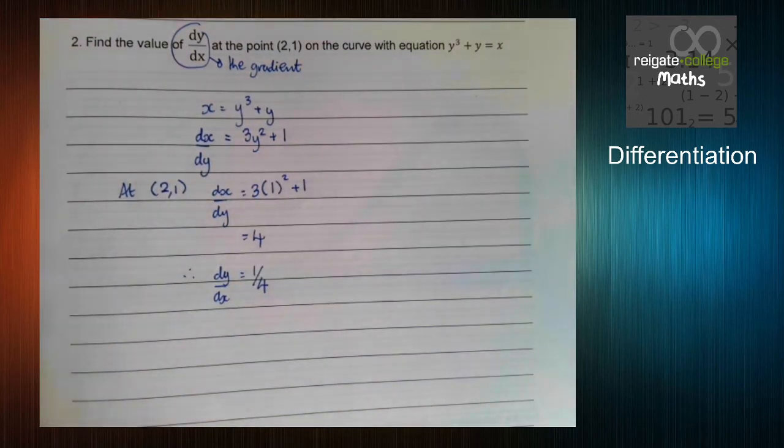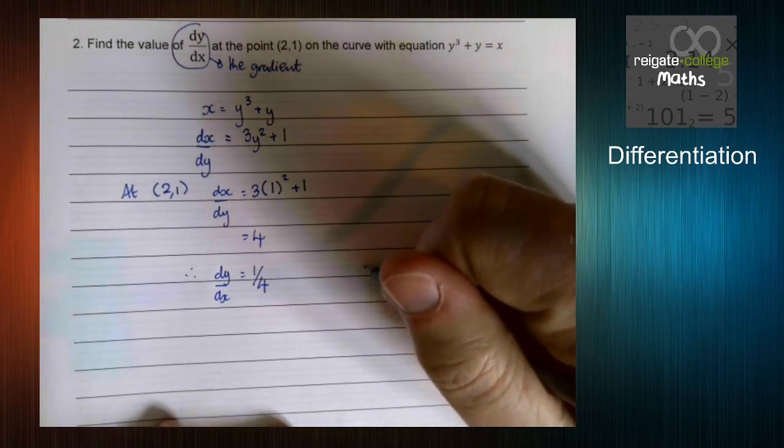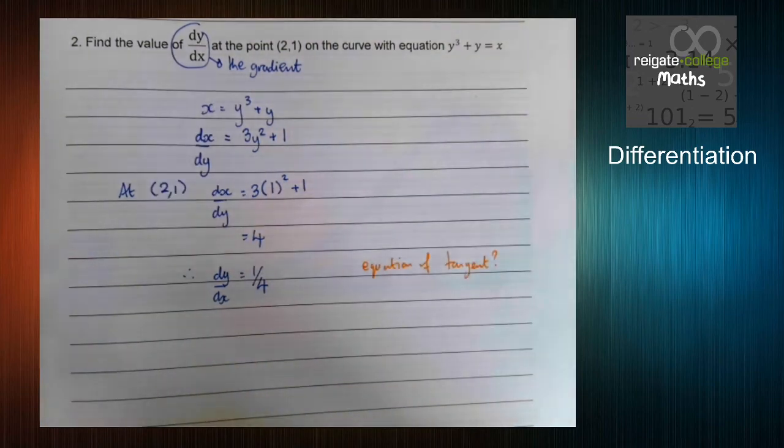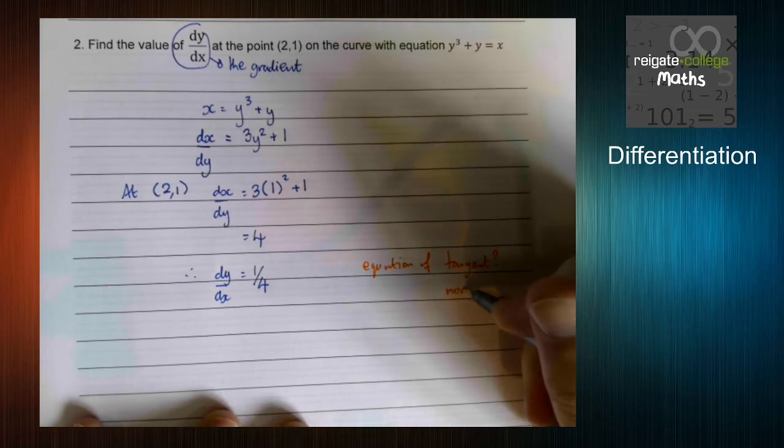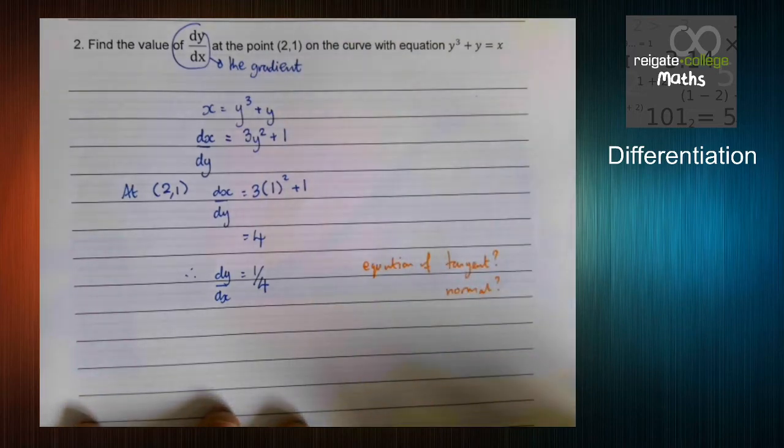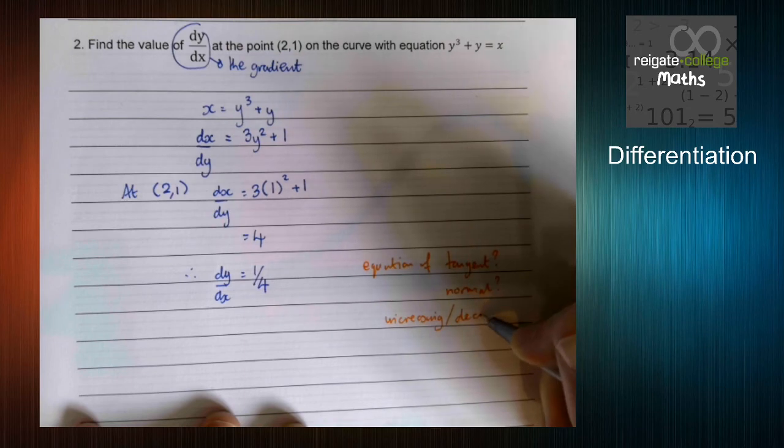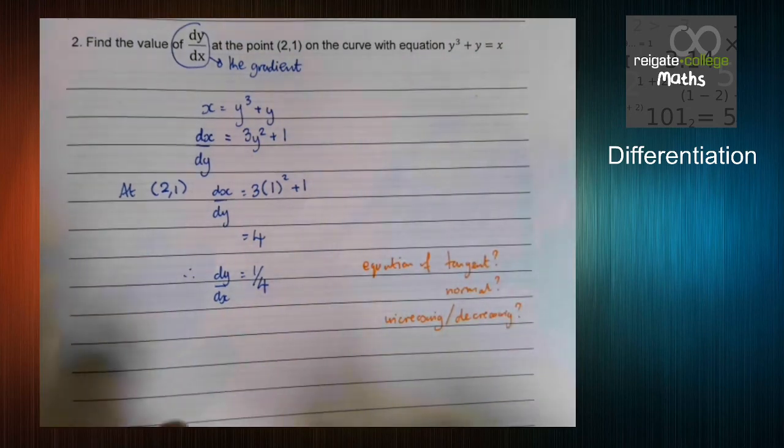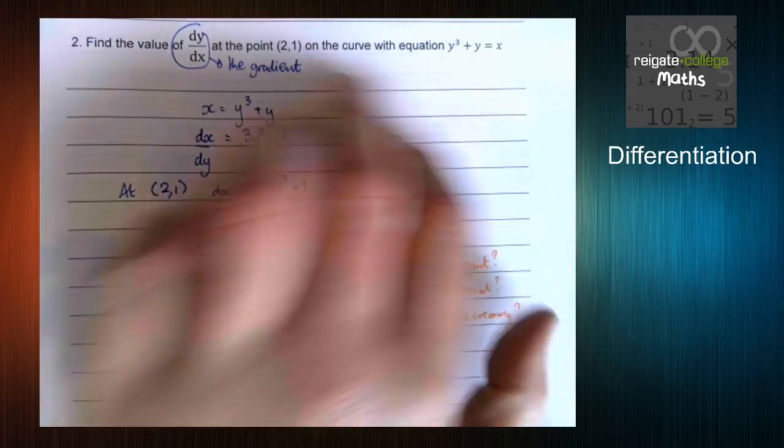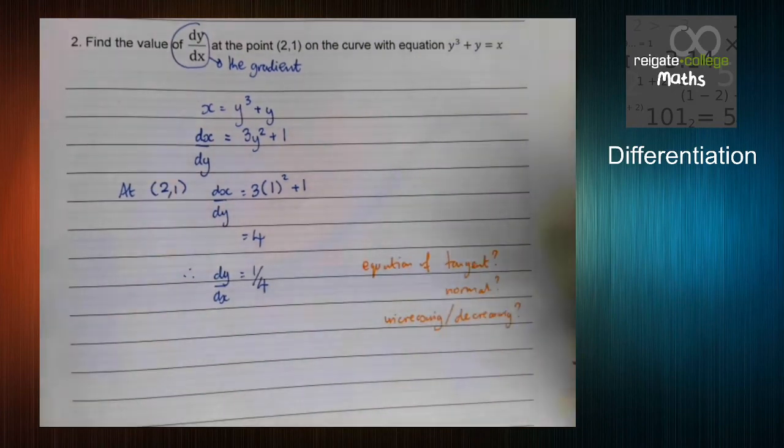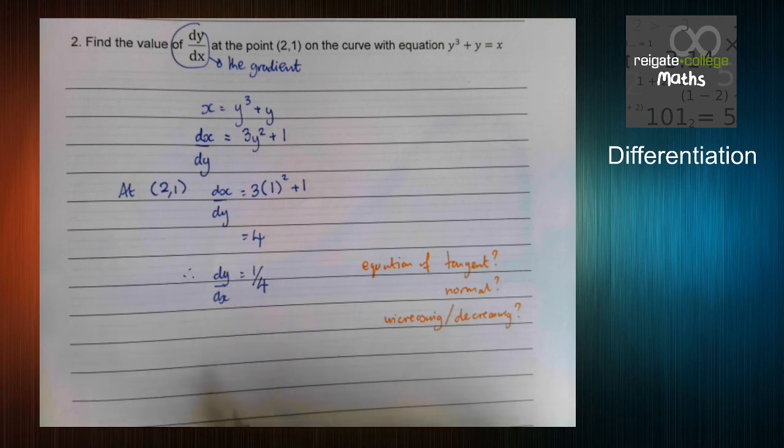What could we do from there? Yeah, so that's this question done, but what extra could we do? Well, we could find the equation of the tangent to the curve because we now know the gradient. Likewise, equation of the normal. We could do things with increasing or decreasing functions. So we can say, is this function increasing or decreasing at the point (2, 1)? Well, the gradient's positive, so it's increasing. That kind of thing. This is all what we did in the first year. Just the way you get the derivative is a little bit different.